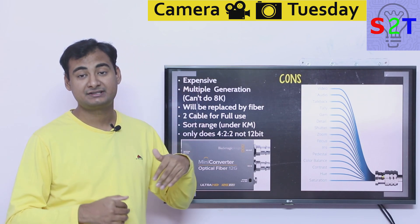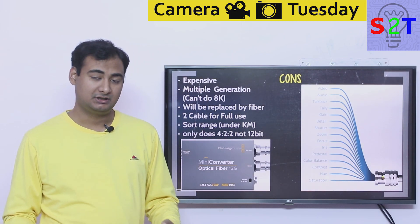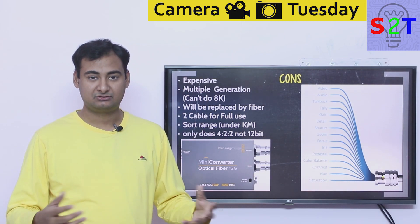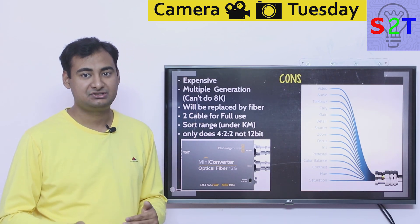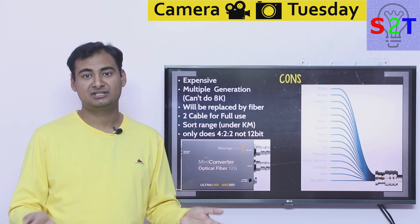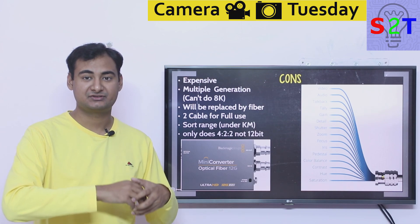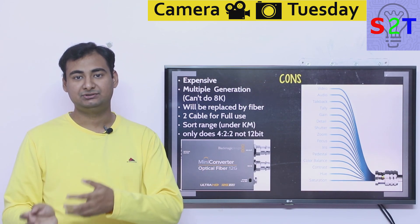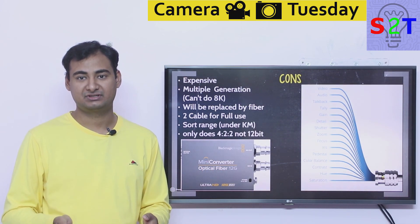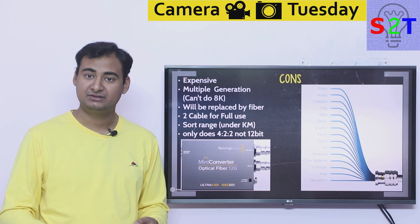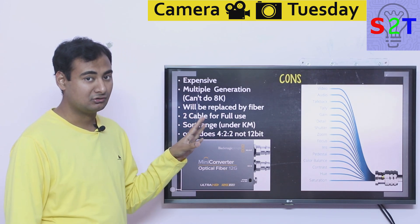Are there consequences to SDI? Absolutely. The first is that because it's not mass-marketed to a large audience, it's never as cheap as HDMI. HDMI is cheap simply because it's mass-produced in billions of units, whereas SDI equipment is produced in hundreds of thousands — so there is an inherent cost to it.